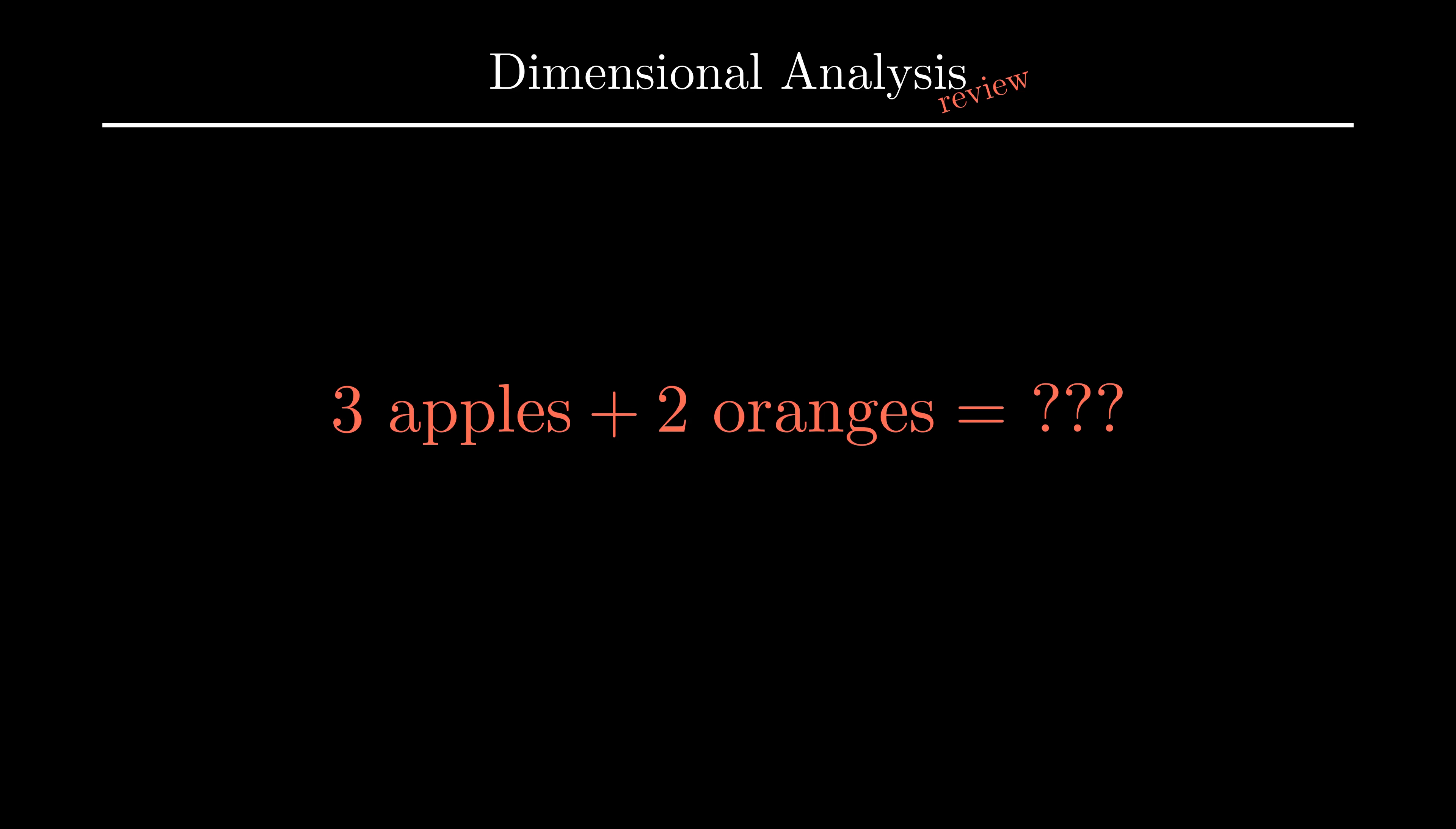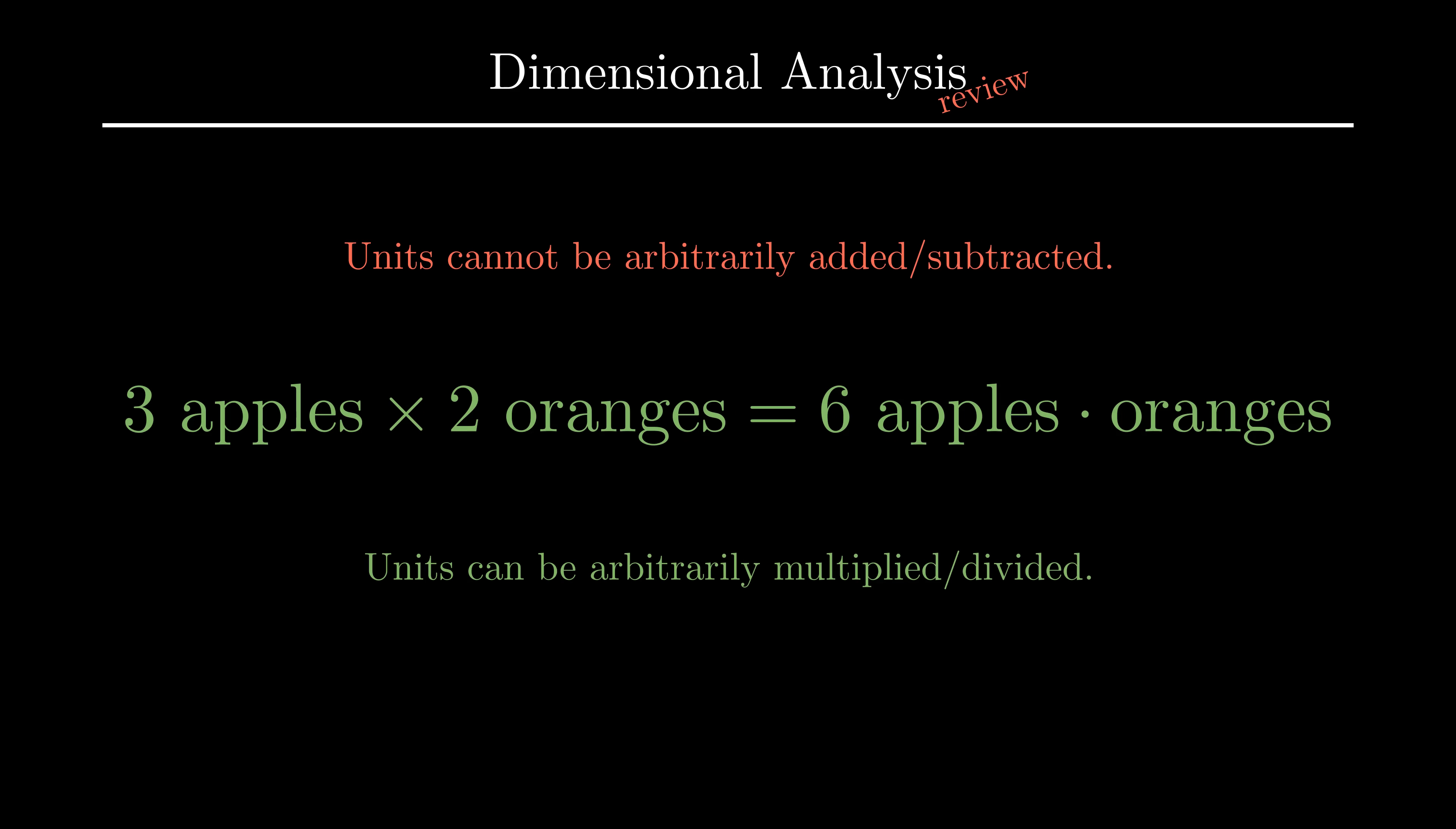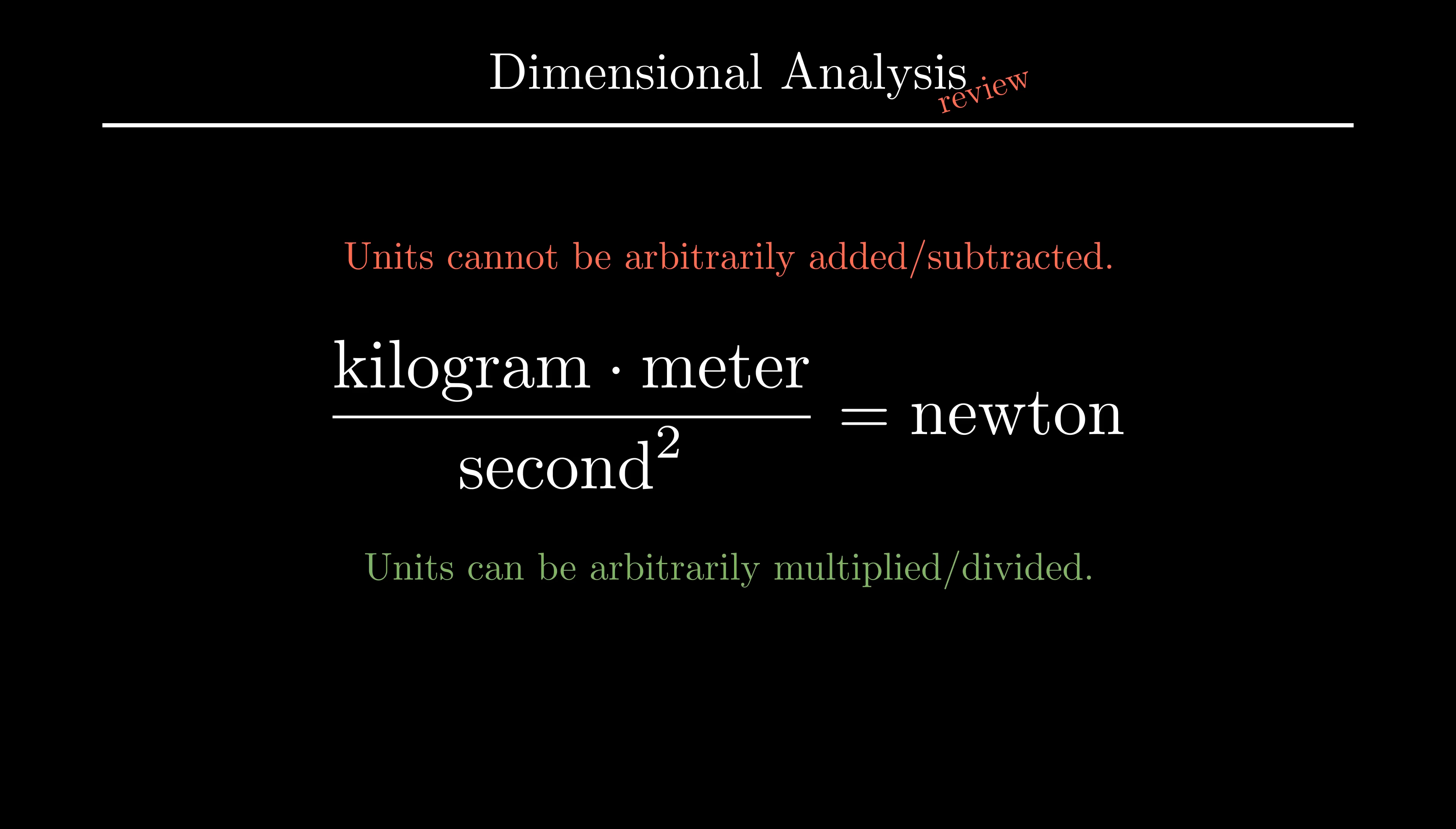This means that we can even do arithmetic with these units. Well, sort of. We can do 3 apples plus 2 apples, but we can't do 3 apples plus 2 oranges. As the adage goes, you can't compare apples to oranges. It turns out that you can't add and subtract arbitrary units together, but you can arbitrarily multiply and divide units. Length times length represents area. Length divided by time represents speed. Mass times length divided by time divided by time is force. Dollars divided by apples can represent the price of an apple. People times time can represent work hours. Any units, no matter how different, can mathematically be multiplied or divided together to obtain a coherent quantity.